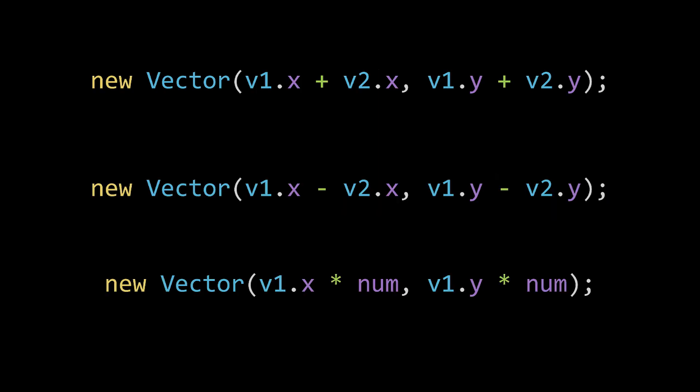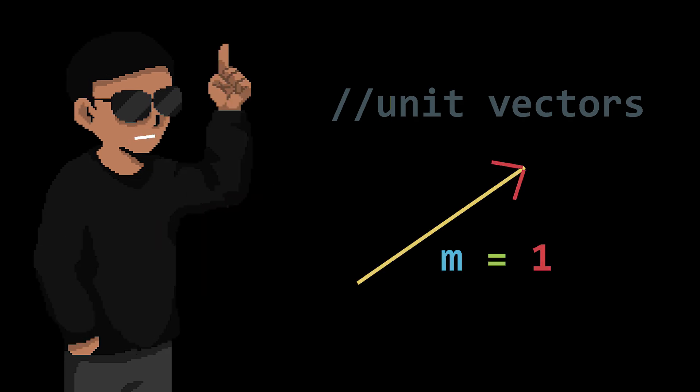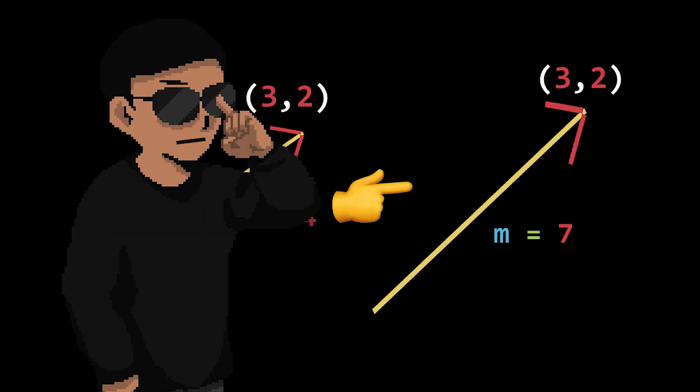You can add, subtract, and multiply vectors quite easily, and they generally just make our calculations a lot easier. There's also something called unit vectors, a vector that always has a magnitude of 1. It's used for cases where you want to change the magnitude of a vector, but keep its direction the same. Now why would you need to do this? You might ask.